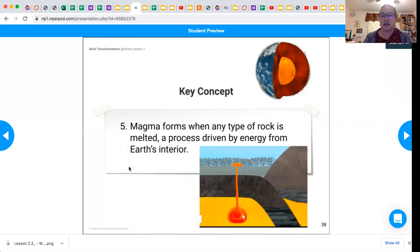So the next key concept number five is magma forms when any type of rock, any type of rock is melted. A process driven by energy from Earth's interior. So the core of the Earth is what's driving the magma to form or to melt. So rock is being melted within the interior of the Earth by the energy from Earth's interior.